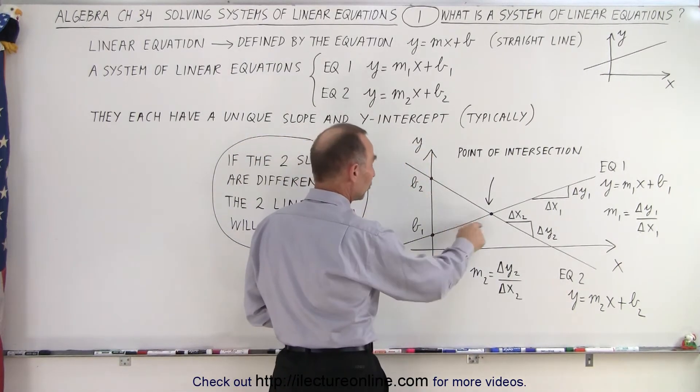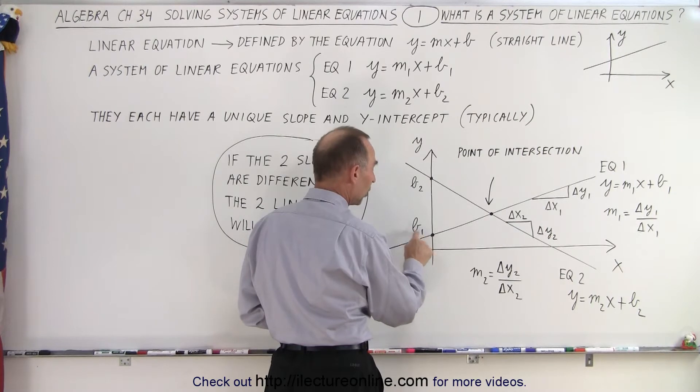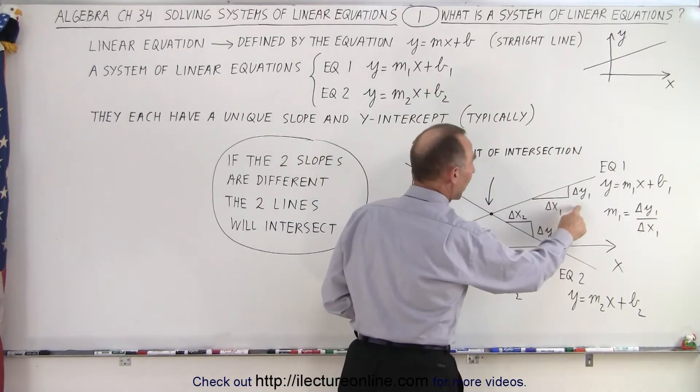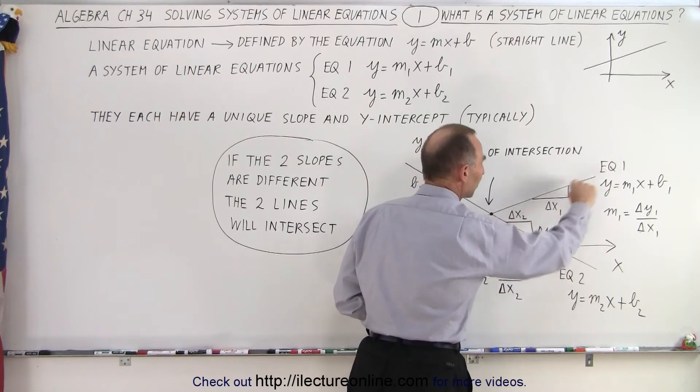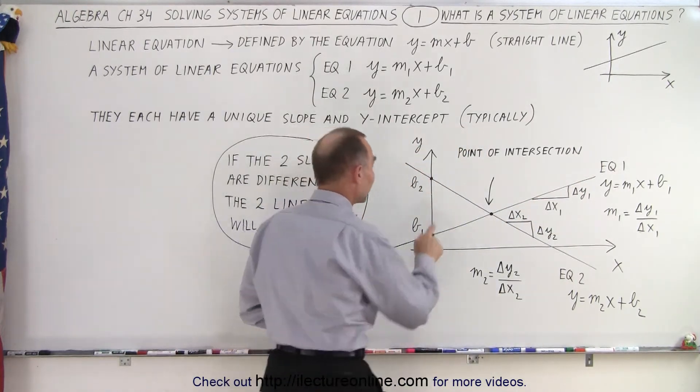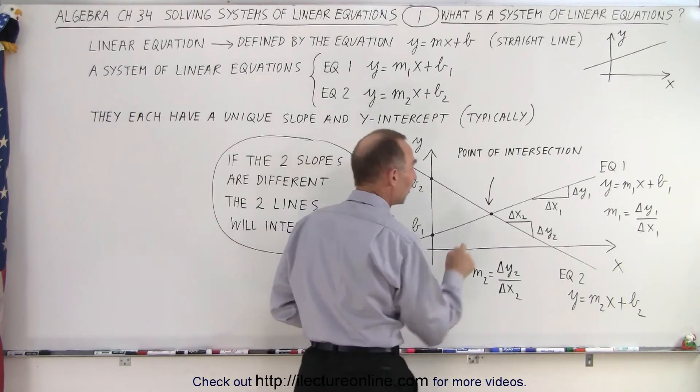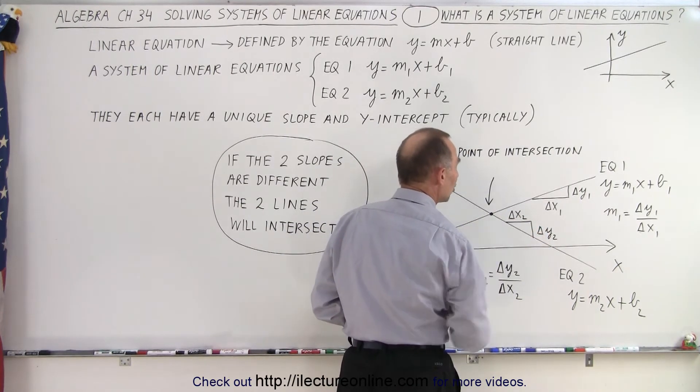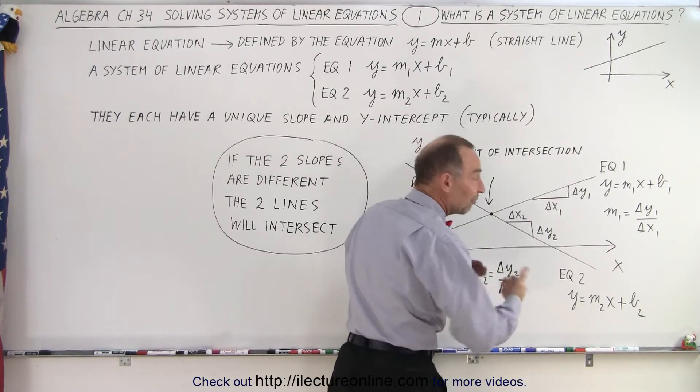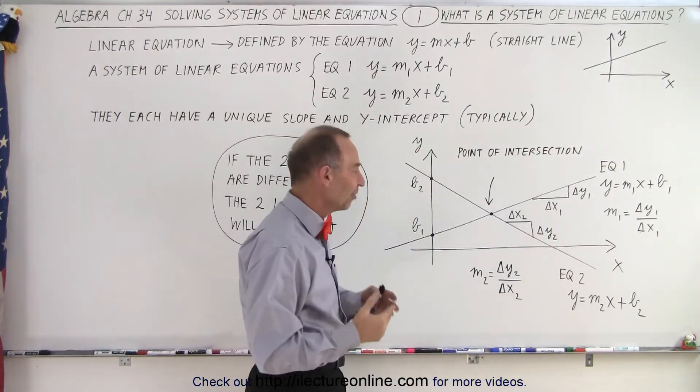So notice equation one has a y-intercept called b1, and it has a slope m1, which is defined by the change in y over the change in x for that particular line. For the second equation, we have a different y-intercept. We have a different slope defined by the change in y2 and the change in x2. It's simply a different ratio, giving you a different slope.